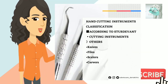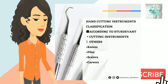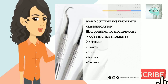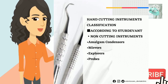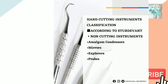Other cutting instruments include knives, files, scalers, and carvers. Non-cutting instruments are amalgam condensers, mirrors, explorers, and probes.